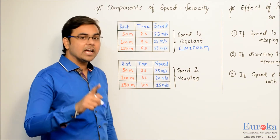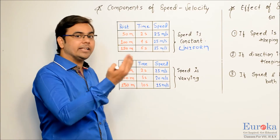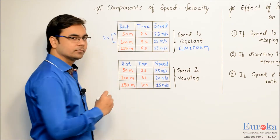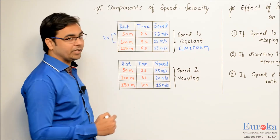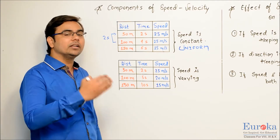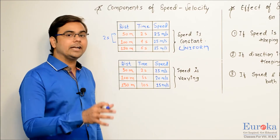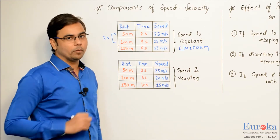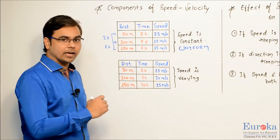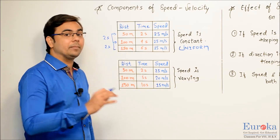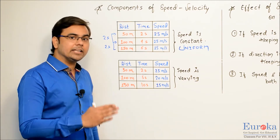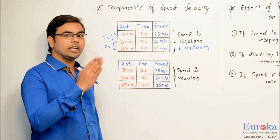Whenever an object covers equal distance in equal intervals of time, it is said to be in uniform speed or uniform motion. For example, the interval between measurements is 2 seconds and the distance covered each time is 50 meters — from 50 to 100 is 50 meters in 2 seconds, and from 100 to 150 is again 50 meters in 2 seconds.